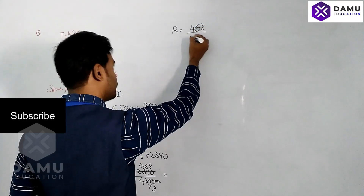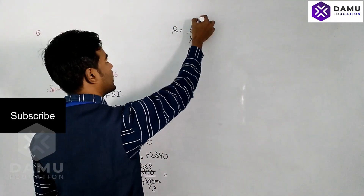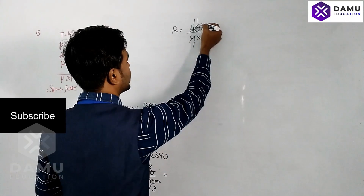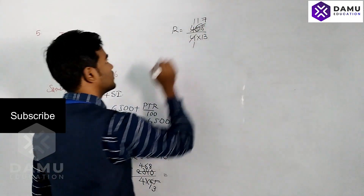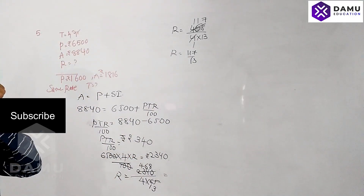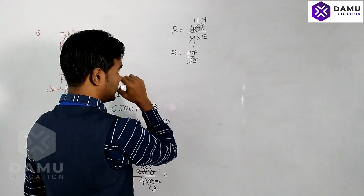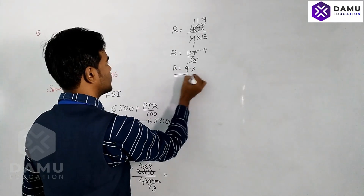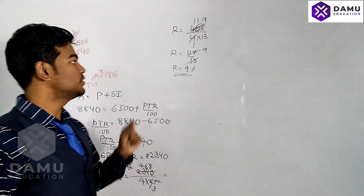Working through the division: four ones are four, four sevens are twenty-eight. Rate equals one hundred seventeen divided by thirty, which simplifies to give R equal to nine percentage. So we have calculated the rate of interest from the first given values as nine percent.